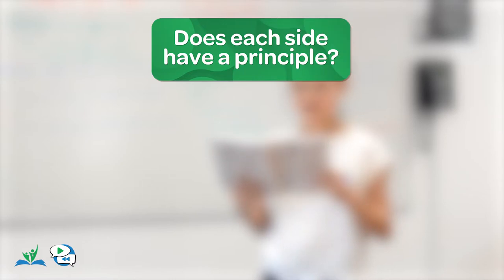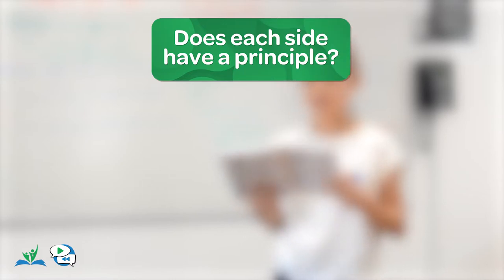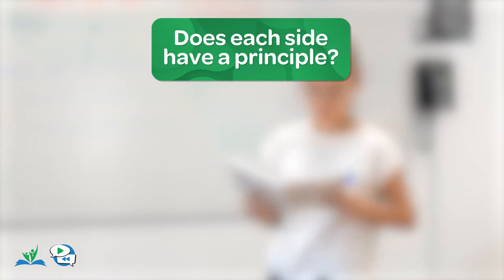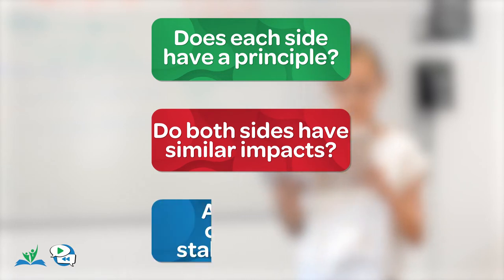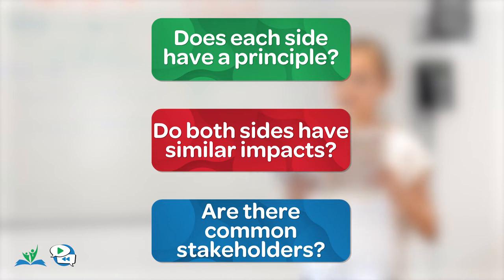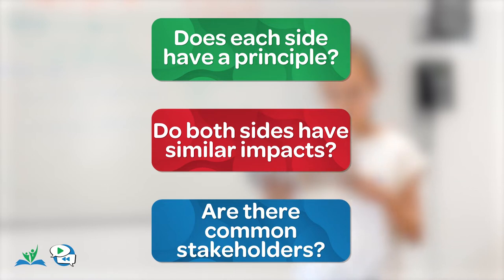Does each side have a principle, and which principle is more important? Or do both sides talk about similar impacts, even if they apply to different stakeholders? Or are there common stakeholders between the teams, but you're actually just arguing about what happens to that stakeholder? All of those could be themes.